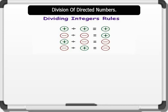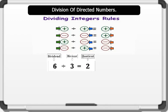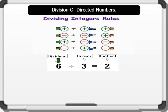Division of Directed Numbers. The picture on the board illustrates the rules for dividing integers or directed numbers. Where: plus divided by plus equals plus; minus divided by minus equals plus; plus divided by minus equals minus; and minus divided by plus equals minus. Remember that in some cases the positive signs are invisible. It is important to note that the number we divide is called the dividend, the number we use to divide is called the divisor, and the answer gotten is called the quotient.